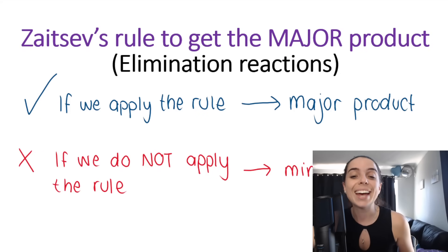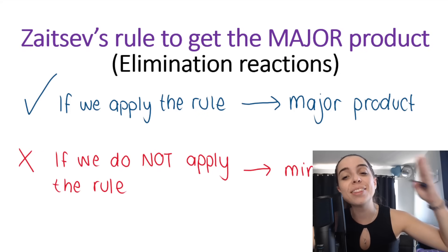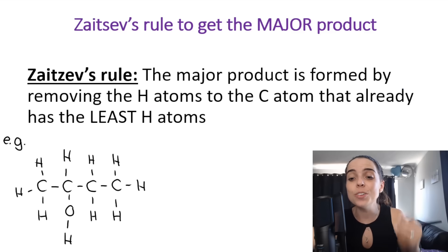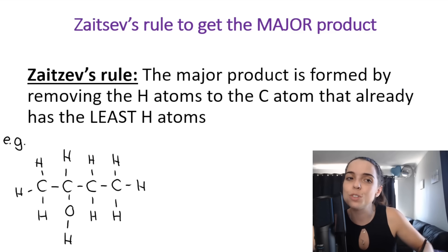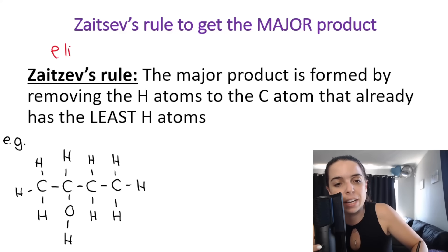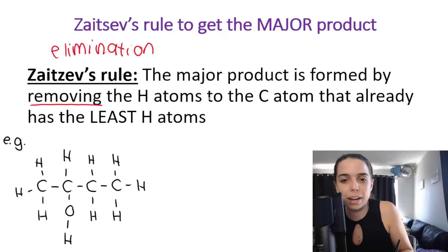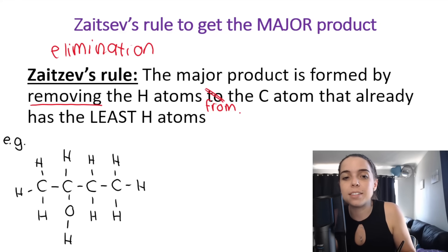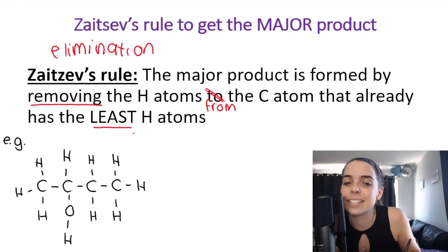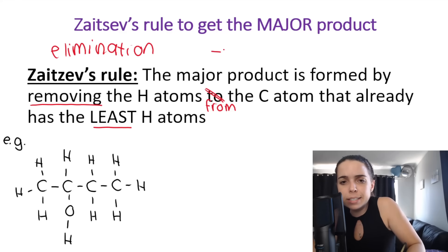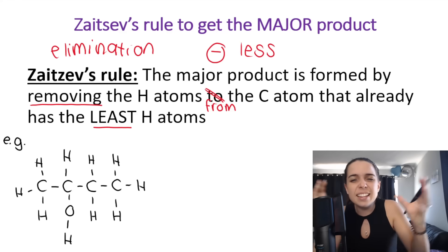Again, if we apply Zaitsev's rule, we get the major product. If we ignore the rule and do the opposite, we get the minor product. Take note how Zaitsev's rule is different to Markovnikov's rule. Zaitsev's rule is for elimination and elimination only. It says that the major product is formed by removing — elimination is to remove — removing the hydrogen atoms from the carbon atom that already has the least hydrogen atoms. How I think of this: when we remove, I'm minusing, and 'least,' less, little — minus.